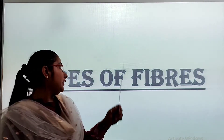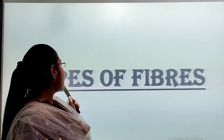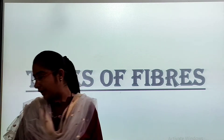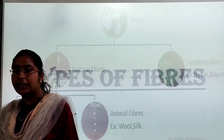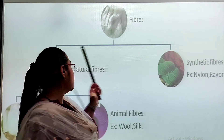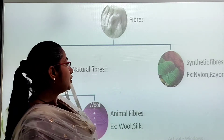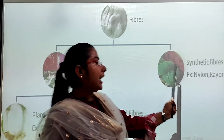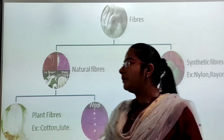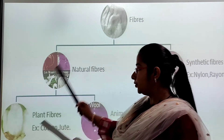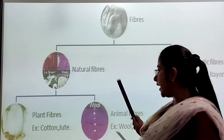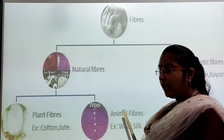Now we have started with the types of fibers. There are 2 types of fibers: natural fibers and synthetic fibers. And natural fibers are further of 2 types: plant fibers and animal fibers.